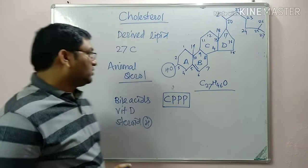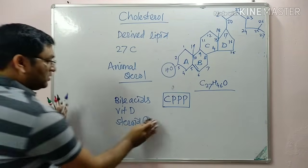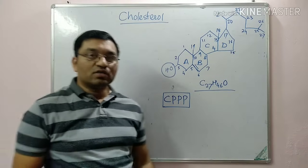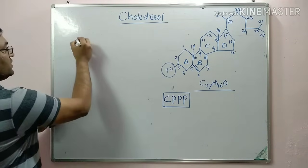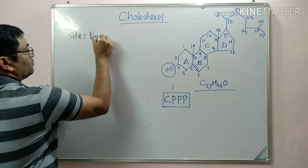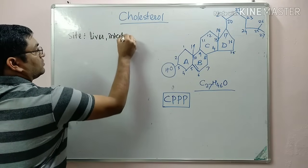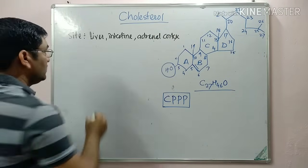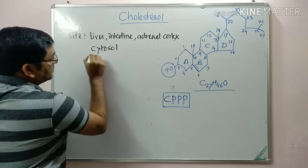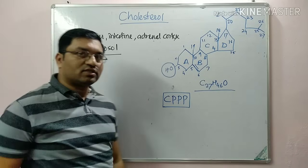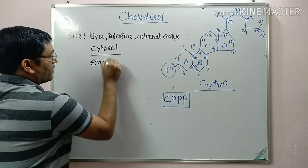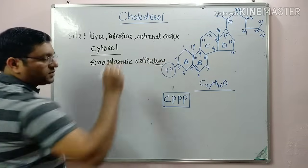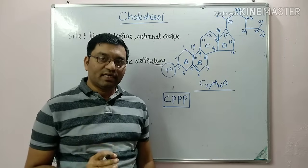Now coming to cholesterol biosynthesis — first we'll discuss the sites. The synthesis of cholesterol occurs in almost all nucleated cells of the body, especially in the liver, intestinal cells, and adrenal cortex. This is a cytosolic pathway, and some important steps occur in the endoplasmic reticulum, especially the step catalyzed by HMG-CoA reductase, which is the committed and rate-limiting step.